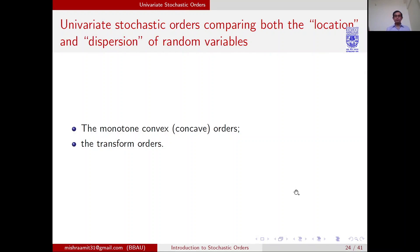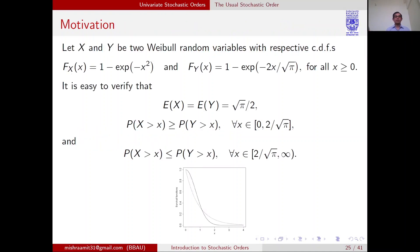Welcome to the third video of the lecture. I will start with the definition of usual stochastic order, but before defining it, we take one motivating example. Let X and Y be two Weibull random variables whose respective cumulative distribution functions are given by F_X(x) = 1 - e^(-x²) and F_Y(x) = 1 - e^(-2x/√π) for all x ≥ 0.